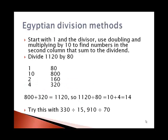For division, in the Egyptian division method, the idea was to start with 1 and the divisor, and to use doubling and also multiplying by 10 to find numbers in the second column that sum to the dividend. So if we wanted to divide 1,120 by 80, I'll start with 1 and 80. I take 1 and 80 and multiply them both by 10 to get 10 and 800.